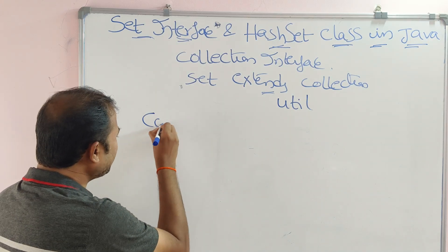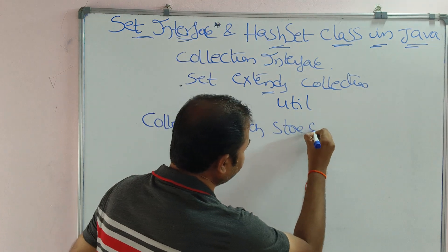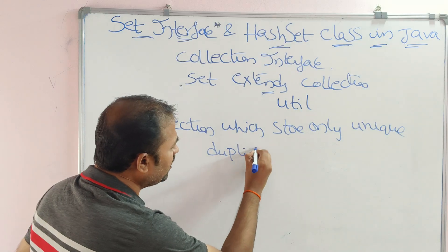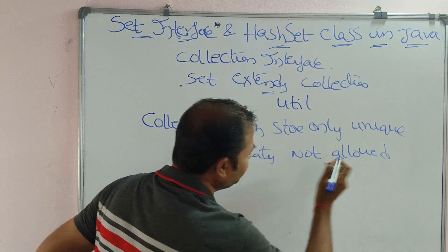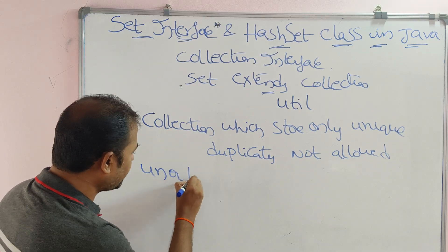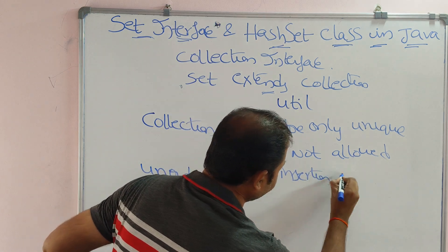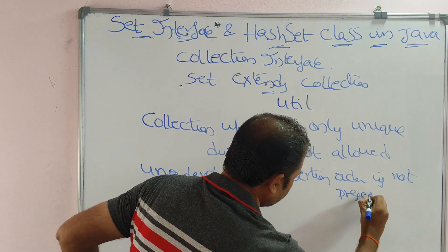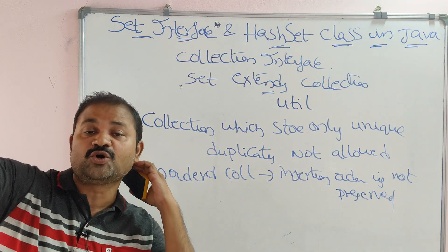Set represents a collection which stores only unique elements. Unique means duplicate elements are not allowed. Set also contains an unordered collection of elements — unordered collection means insertion order is not preserved.